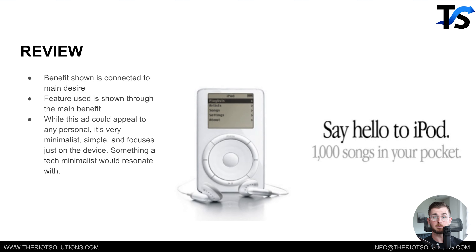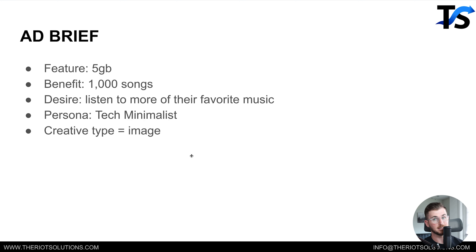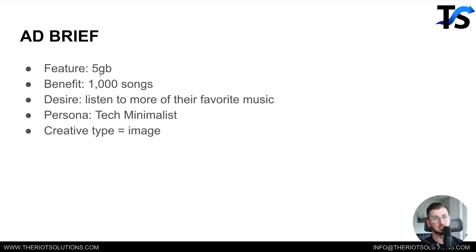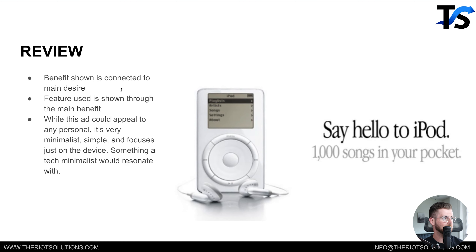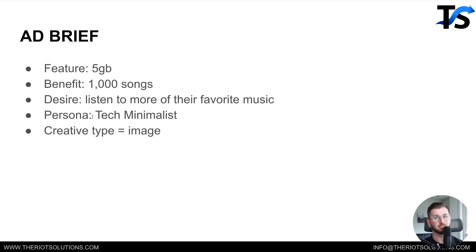As you start to build these briefs, you want to swap out one variable at a time. Maybe try this exact brief with just a different persona. Or do this same brief but with a video instead of an image. Or swap the desire for better portability and showcase the benefit of 'fits in your pocket' and the feature of those small dimensions. This is how you produce different variations. The key is it eliminates focusing on too many personas, benefits, desires, and features in one ad — you focus on one specific thing. If you want to target more personas, just create more ads with this same brief and change the persona of each one.